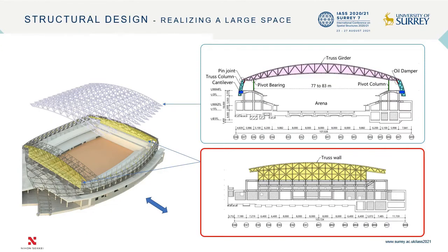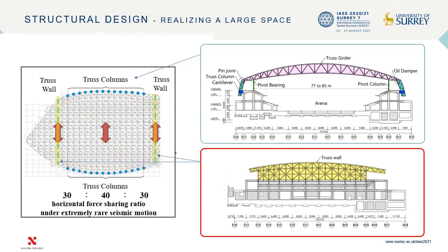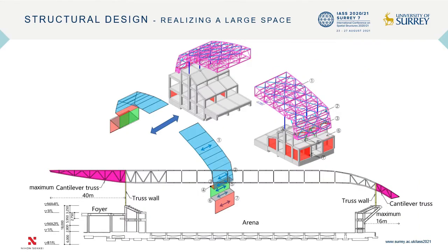The other structural system is a steel truss shear wall on the north and south side of the arena, which primarily resists horizontal loads. Each of these truss walls bears 30% of horizontal force and the truss columns bear 40% of horizontal force. In the long side direction, braces with sufficient stiffness were installed on the roof surface and wall surface to resist horizontal force as an outer shell structure.